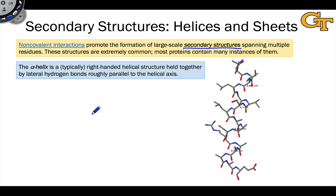The first secondary structure we'll look at is the alpha helix, and this is a structure in which the backbone assumes a helical shape.